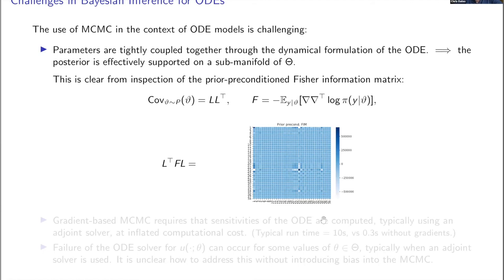First, depending on the nature of your differential equation, it can happen that parameters are tightly coupled together — perhaps appearing as a ratio or product — and the data is very informative about the value of that ratio. That creates essentially a sub-manifold in parameter space where parameters on the sub-manifold are consistent with the data and those off it are not. Sub-manifolds are challenging because many MCMC methods exploit the fact that the prior area can be used as a reference measure for the posterior, and if you have a true sub-manifold that's not the case.